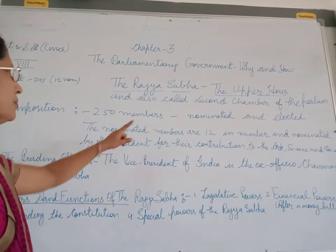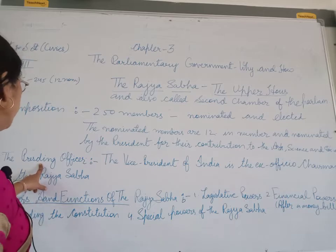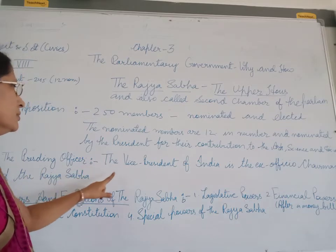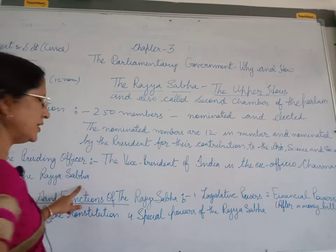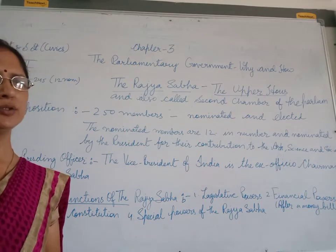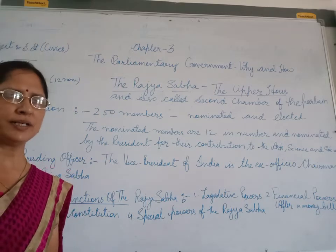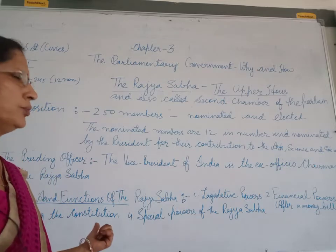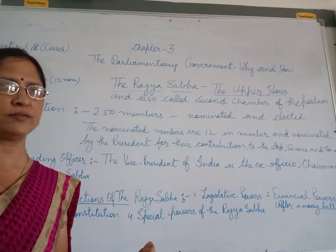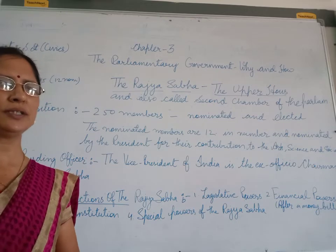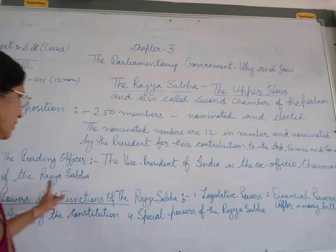In the continuation of Rajya Sabha, here we talk about the presiding officer. The Vice President of India is the ex-officio Chairman of the Rajya Sabha. Just as the Speaker was ex-officio of the Lok Sabha, the ex-officio Chairman of the Rajya Sabha is the Vice President. The President is the head of the state, head of the country, and the Vice President is the ex-officio Chairman of the Rajya Sabha.